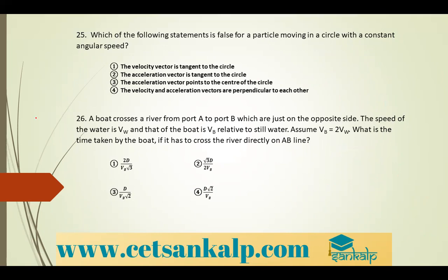Next problem: which of the following statements is false for a particle moving in a circle with constant angular speed? The velocity vector is tangent to the circle — true. The acceleration vector is tangent to the circle — false, it points to the center. The velocity and acceleration vectors are perpendicular to each other — true. So option 2 is the false statement.